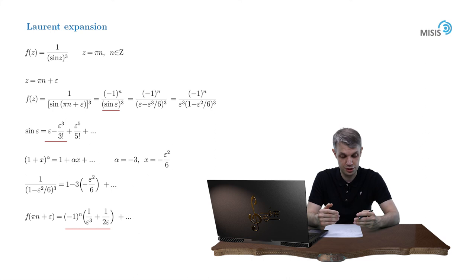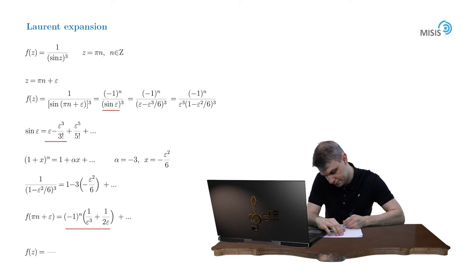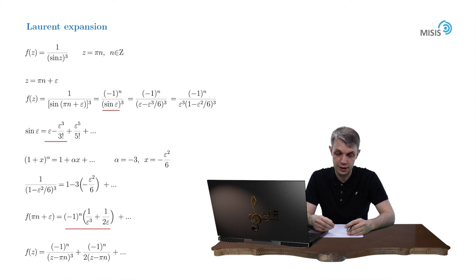And then we return to our initial variable z to obtain the final answer, which is as follows. Now a legitimate question is what would be the region of validity of this expansion? As you remember from the very derivation of the Laurent expansion, the validity is restricted by the nearest possible singularity to the expansion point.